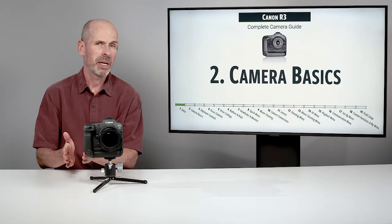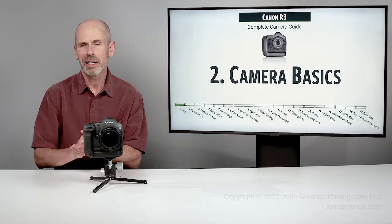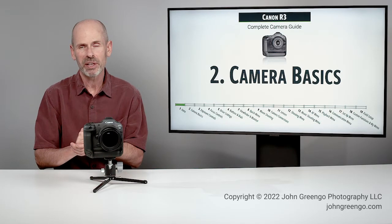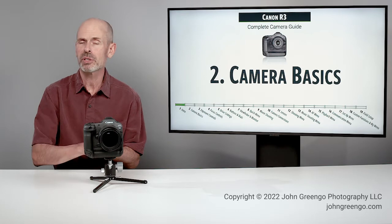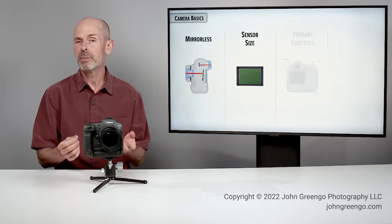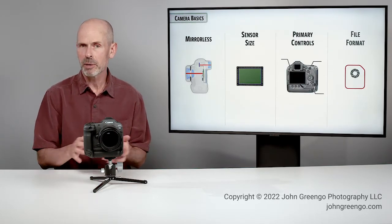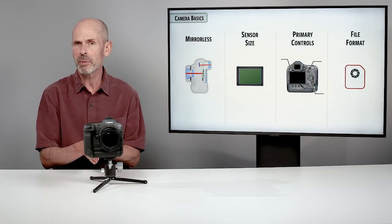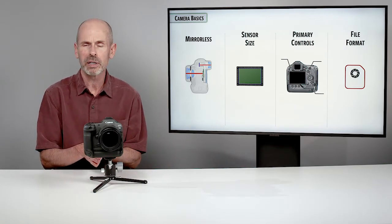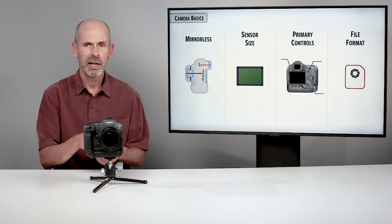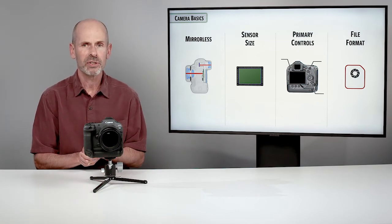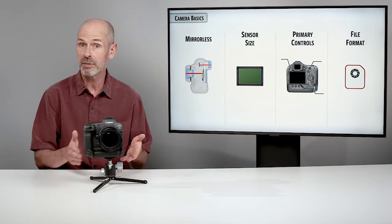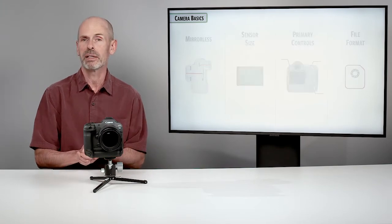Welcome to Section 2, Camera Basics. We're going to take care of a few very basic things in here, but also a few very important things. We'll talk about being a mirrorless camera and having a full-frame sensor, along with a few of the primary controls we're going to need for the remainder of this class, and we're going to get our file format set correctly, because that is a really important feature to have set correctly from the get-go.